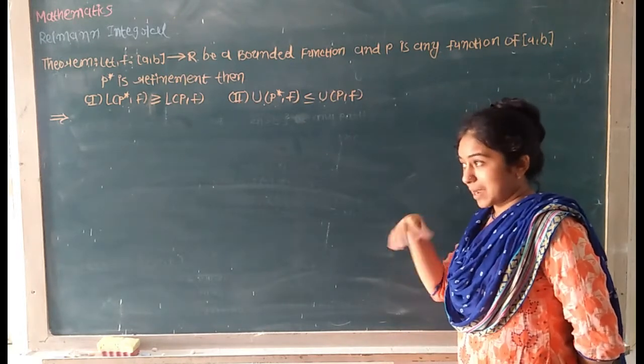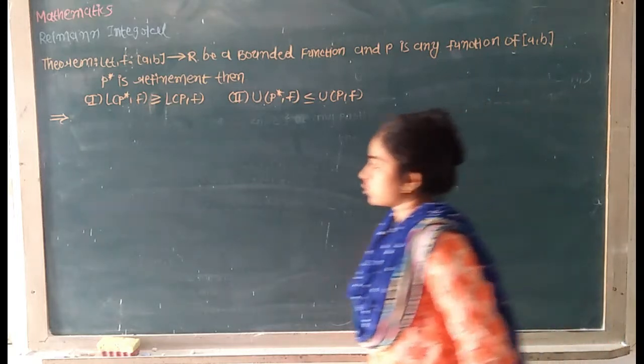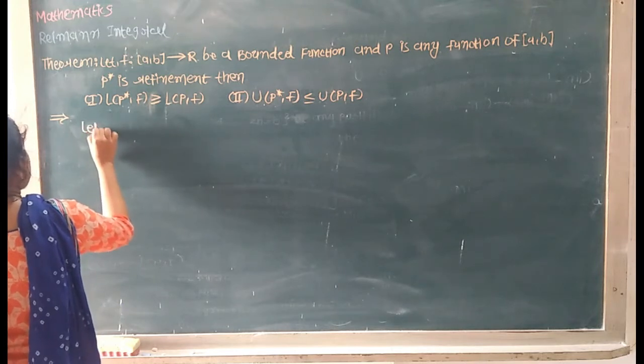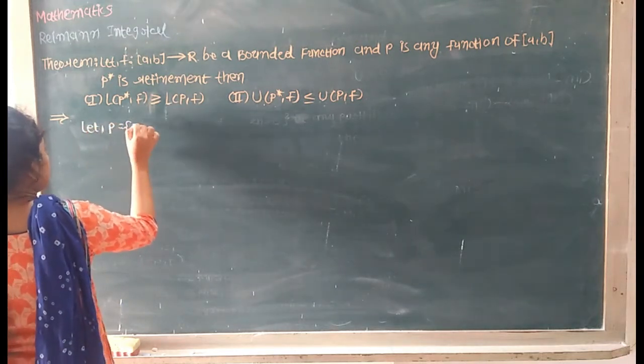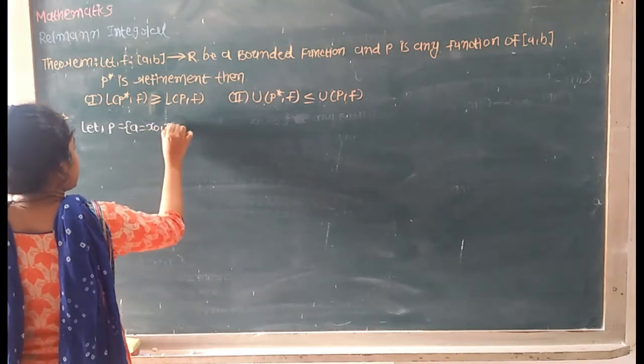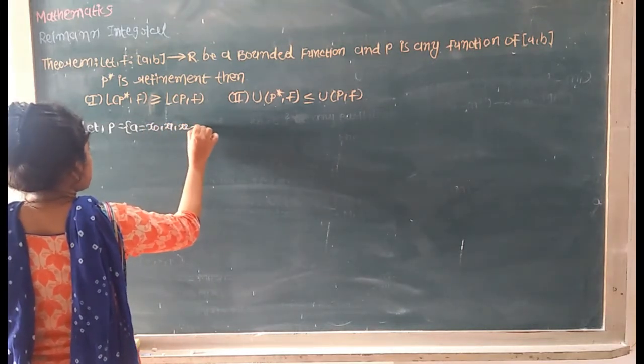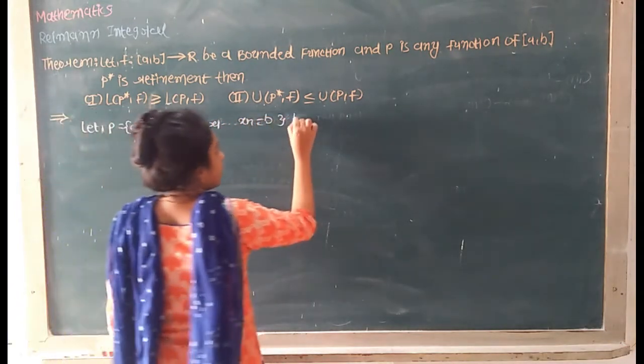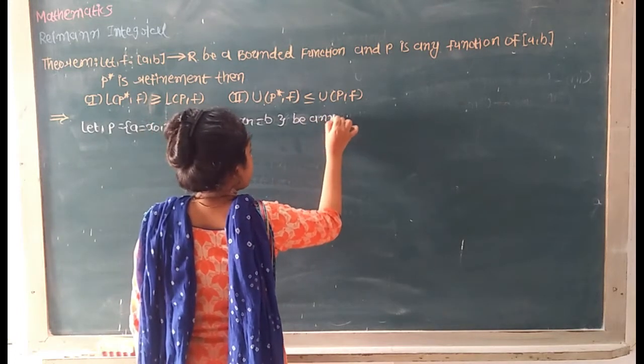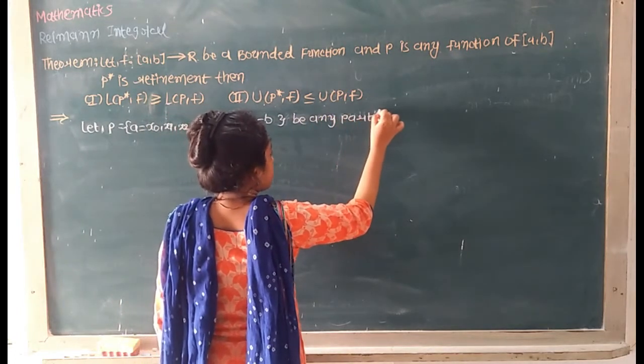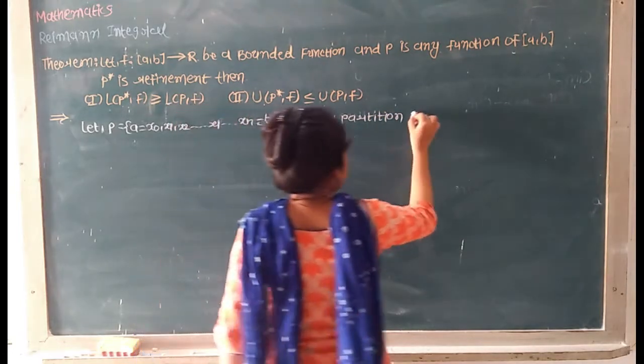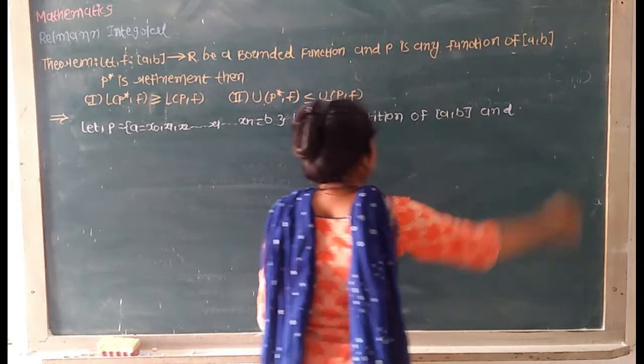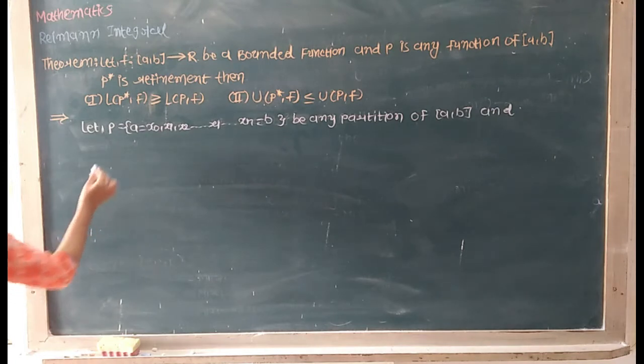Let's collect P is equal to A equals X0, X1, X2, up to Xi equals Xn equals B. Be any partition of the interval, and N.